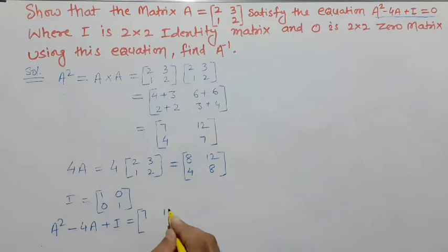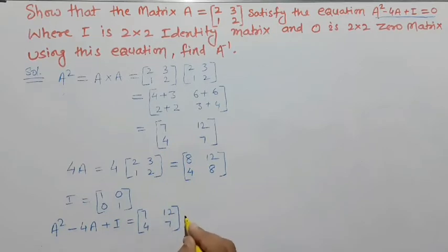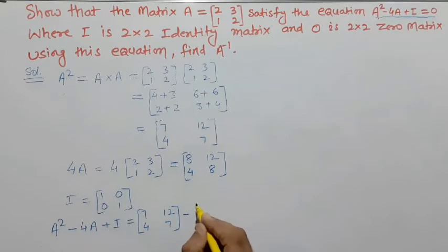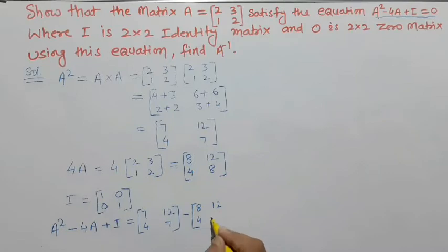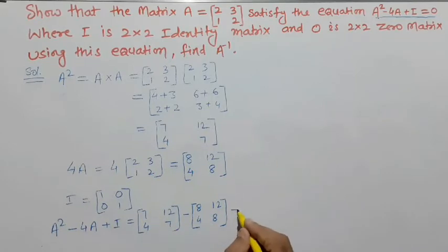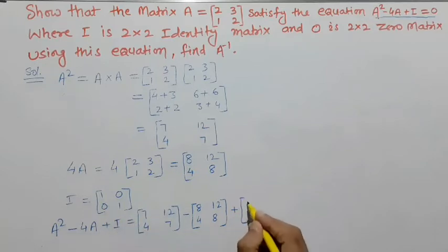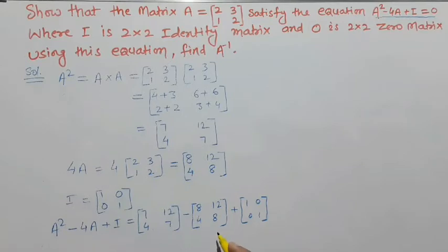A² = [[7,12],[4,7]], minus 4A की value [[8,12],[4,8]], plus I = [[1,0],[0,1]]। इन तीनों matrices को combine करके solve करेंगे।